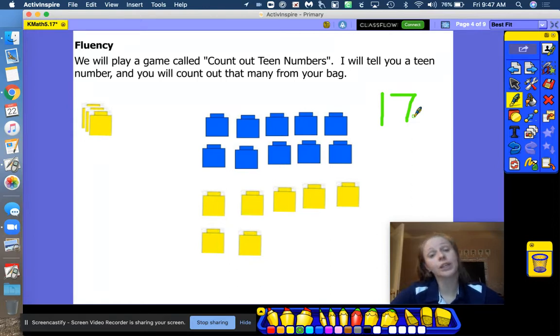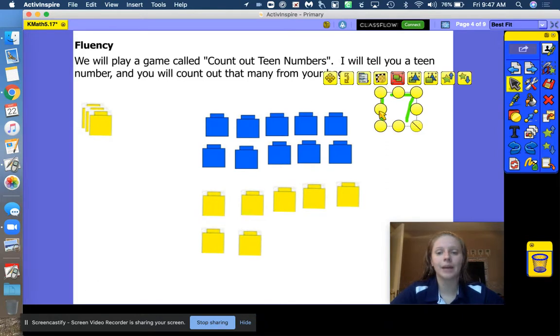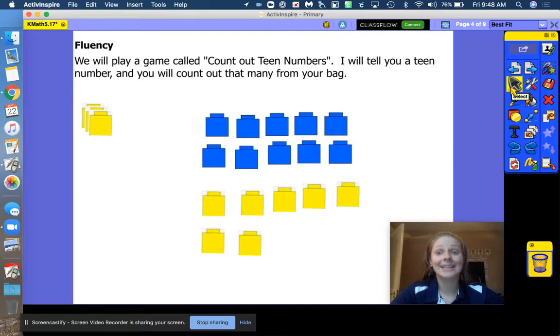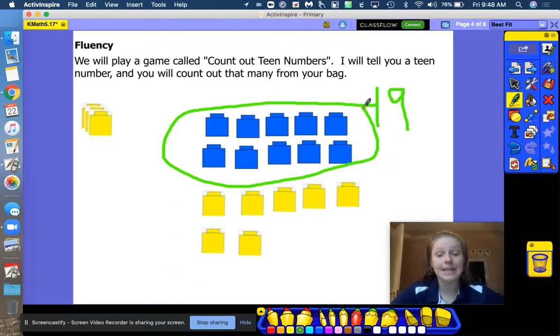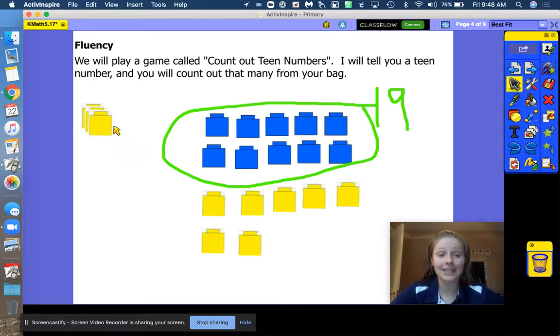Alright, friends. One more. Check your objects. Make sure that you have the same number as me. We are going to do 19. Let's take a look at the numeral first. A 1 and a 9. This 1 represents this 10 here. 10 ones. Now we need 9 extra ones. Right now we have 10, 7, 17. Let's count on. 17, 18, 19. Well done. Keep practicing with those teen numbers, friends.